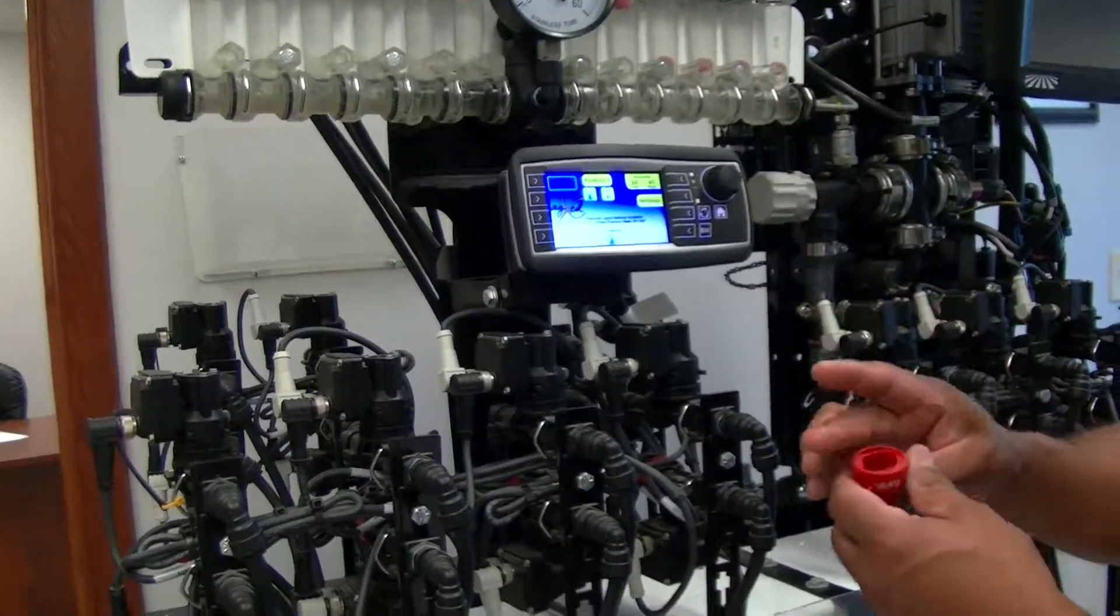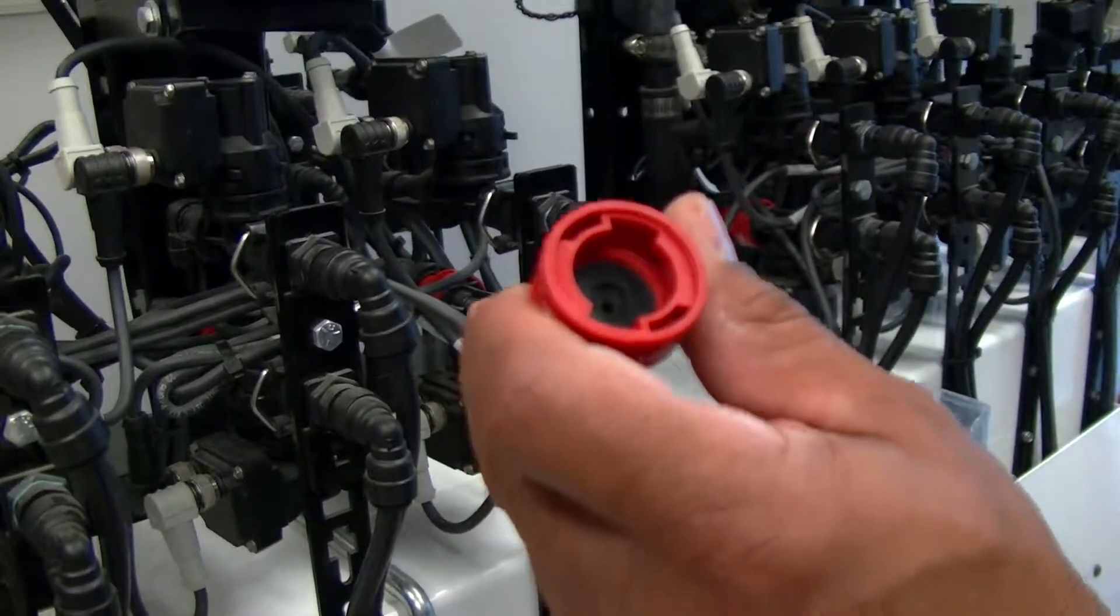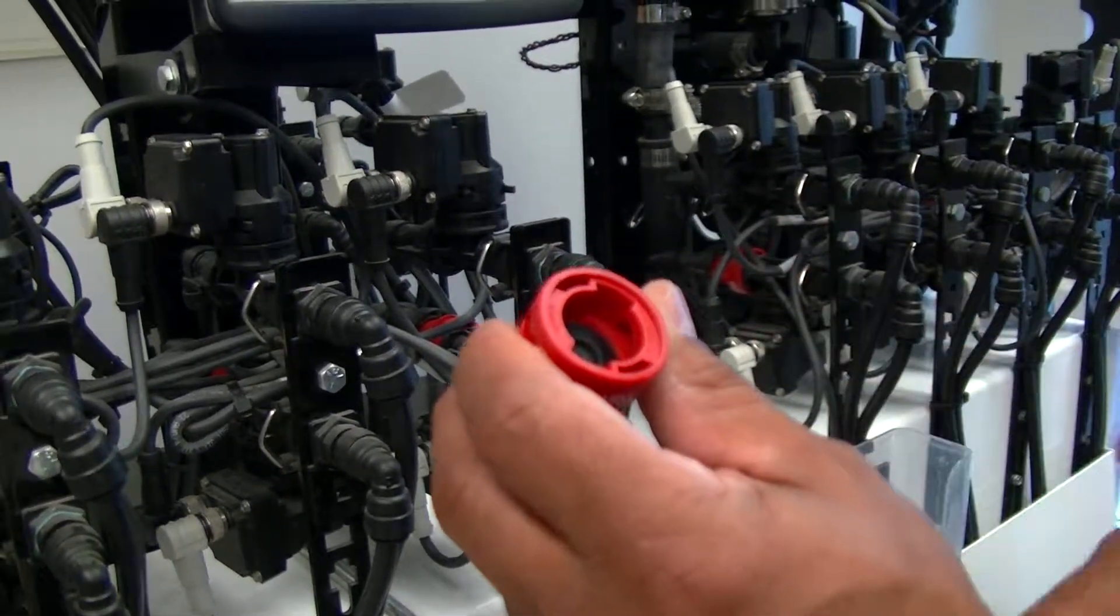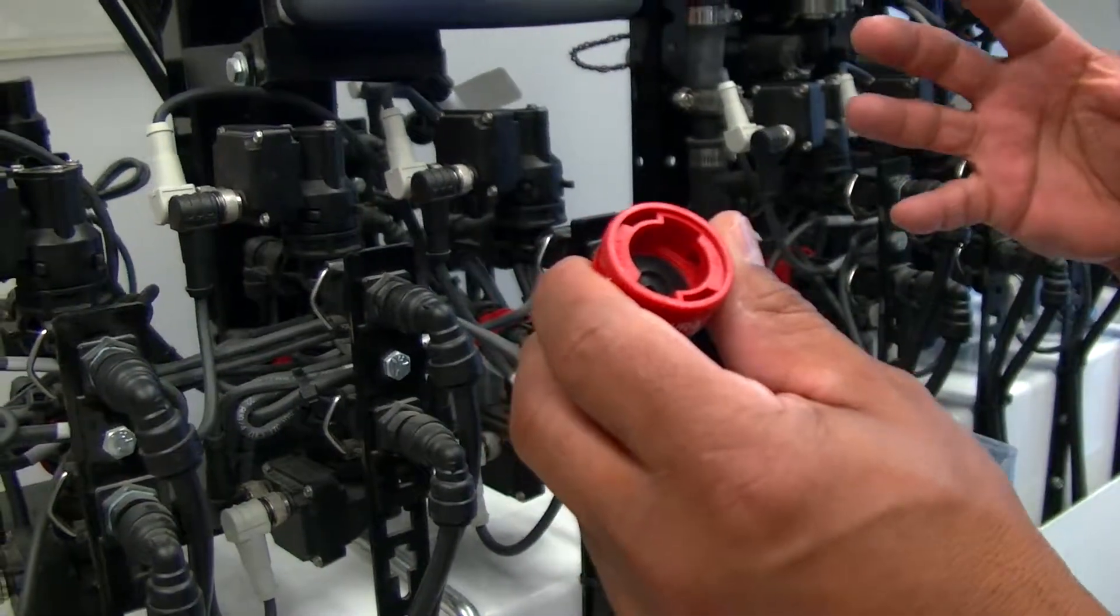What we're showing today is T-Jet's new variable rate orifice and how we've implemented it to enable us to get an even broader range of flow from our system, which allows us to get higher rates and higher speeds.